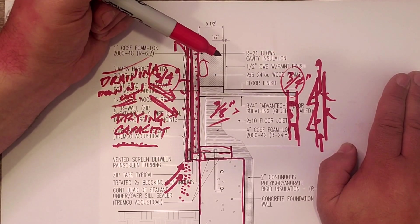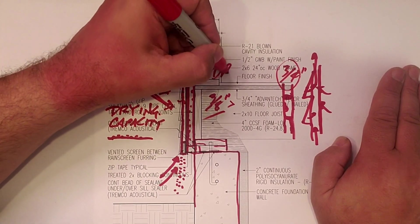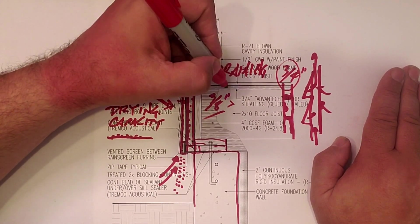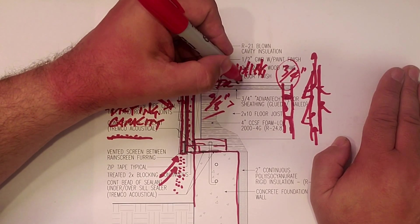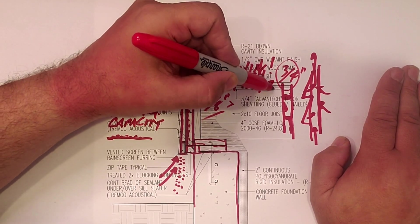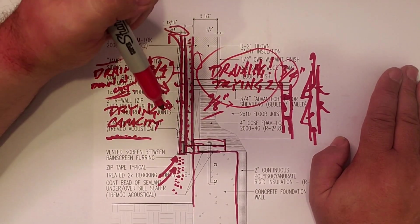Not only are we draining, but we're drying. One and two, you get the best of both worlds: three-quarters of an inch vented rain screen. That's the detail, that's the video, that's everything.